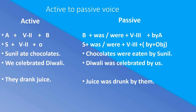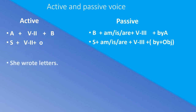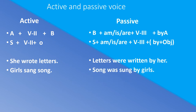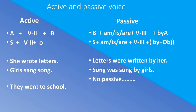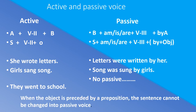The past form of the verb becomes the past participle form. More examples: Active: 'She wrote letters.' (Usne khat likhe.) Passive: 'Letters were written by her.' (Khat uske dwara likhe gaye.) Active: 'Girls sang a song.' Passive: 'Song was sung by girls.' Active: 'They went to school.' — No passive voice. When the object is preceded by a preposition, the sentence cannot be changed into passive voice.